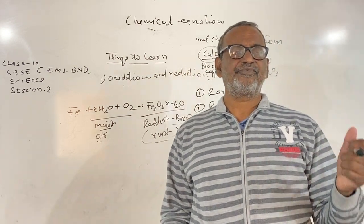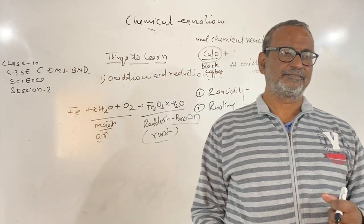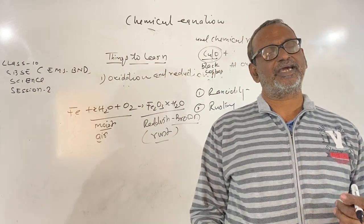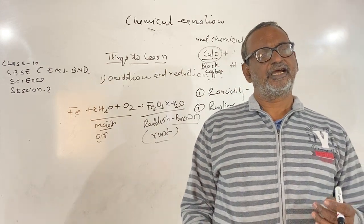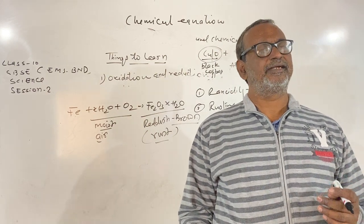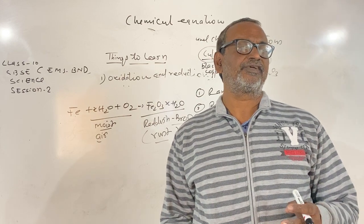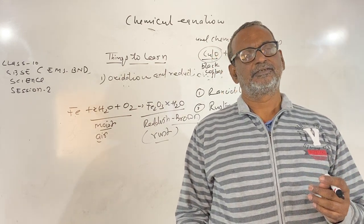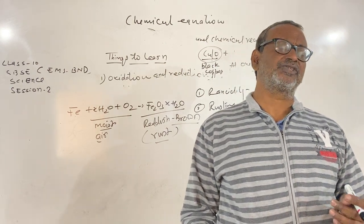Rusting weakens the metal, so it has to be stopped. Rusting can be stopped by cutting off the supply of oxygen or moisture or both. That is why iron grills are usually painted to prevent them from coming in contact with moist air and to prevent rusting. Similarly, greasing also prevents rusting.